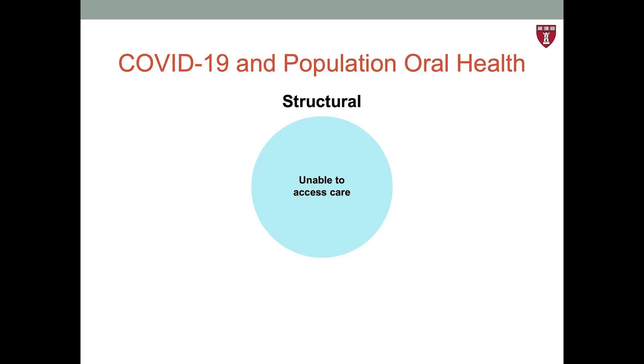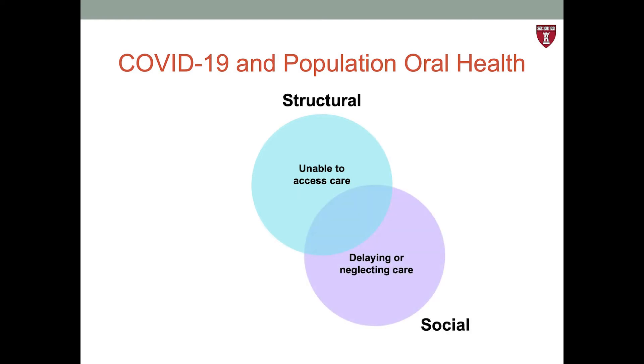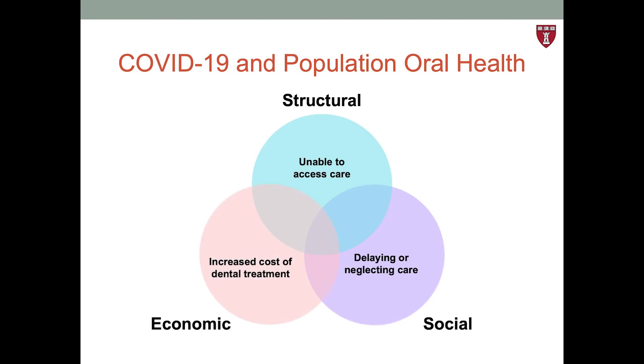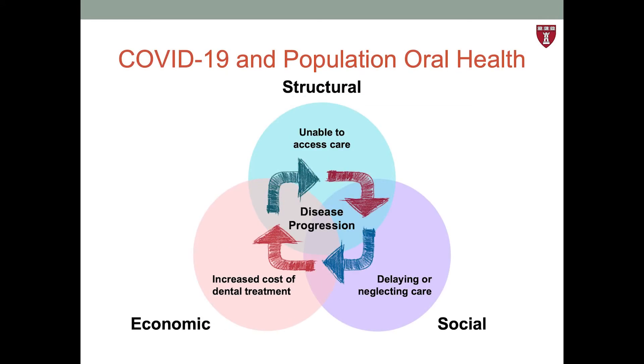Encourage learners to think about the different intersections of social, structural, and economic barriers. You can describe the impact of COVID-19 on population oral health as a snowball effect that builds upon itself, becoming larger and more dangerous. The concept of a vicious cycle has already been introduced in relation to risk factors, oral health, overall health, and COVID-19 exacerbating each other in a biological loop.